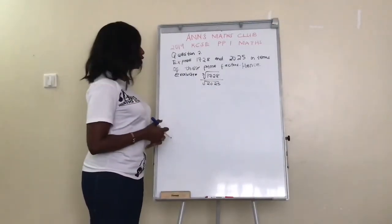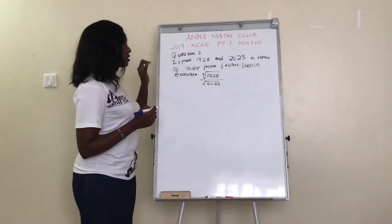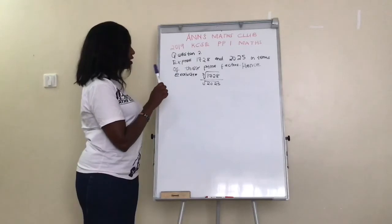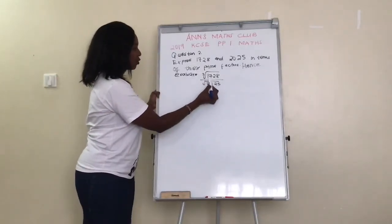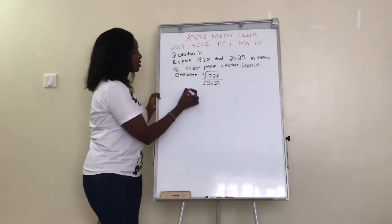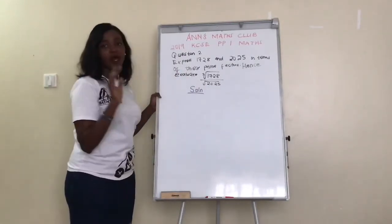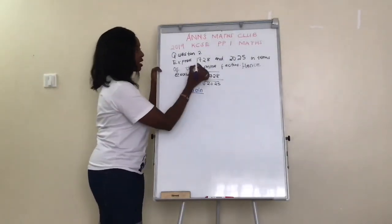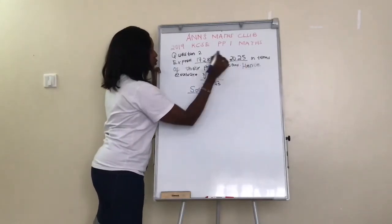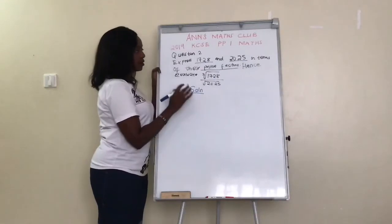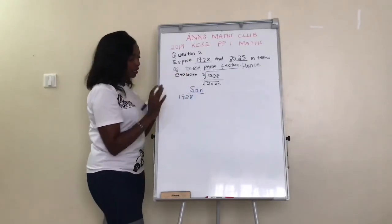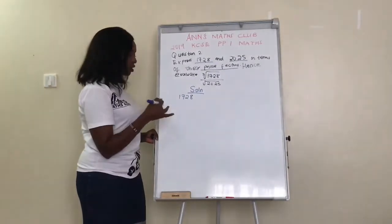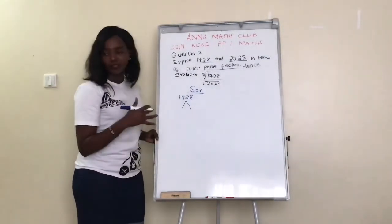On to question number two — you are asked to express 1,728 and 2,025 in terms of their prime factors, hence evaluate the cube root of 1,728 divided by the square root of 2,025. When doing this question, write the solution and remember you have to read the question: you are first asked to express 1,728 and 2,025 in terms of their prime factors. So that is what we do first. Remember, you should have your calculator.